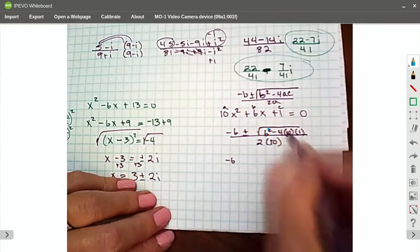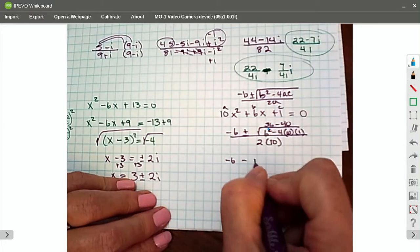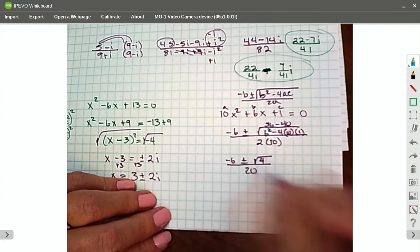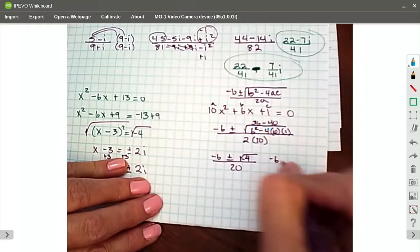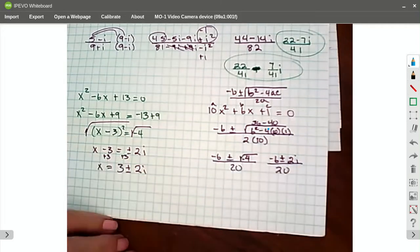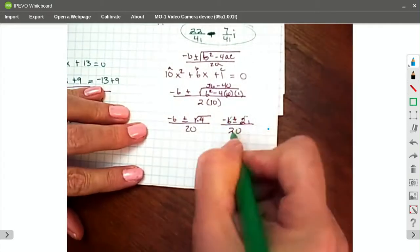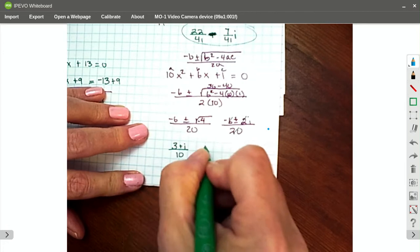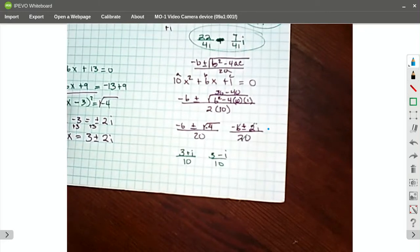Negative 6. I get 36 minus 40. So again, that's going to be a negative 4 over 20. So I've got negative 6 plus or minus 2i over 20. All three of them, I can take a 2 out, and it's got to be all three. So if I divide each of these by 2, I'm going to have 3 plus i over 10 and 3 minus i over 10 are my solutions. And that is 1, 3.